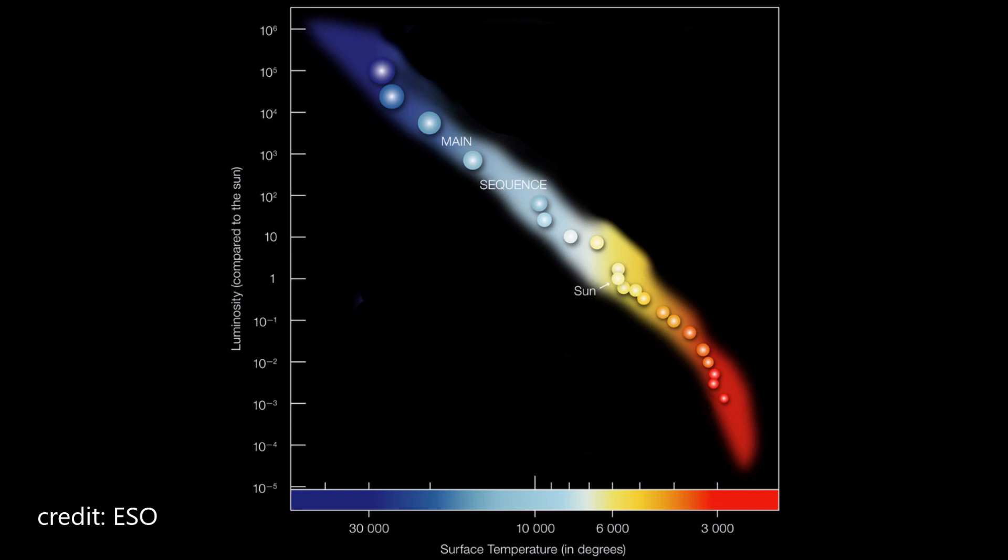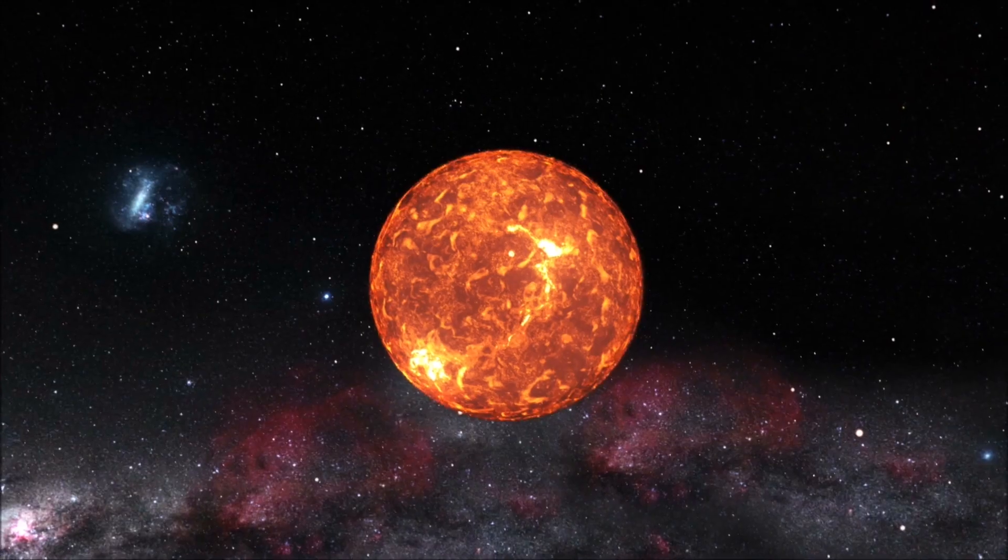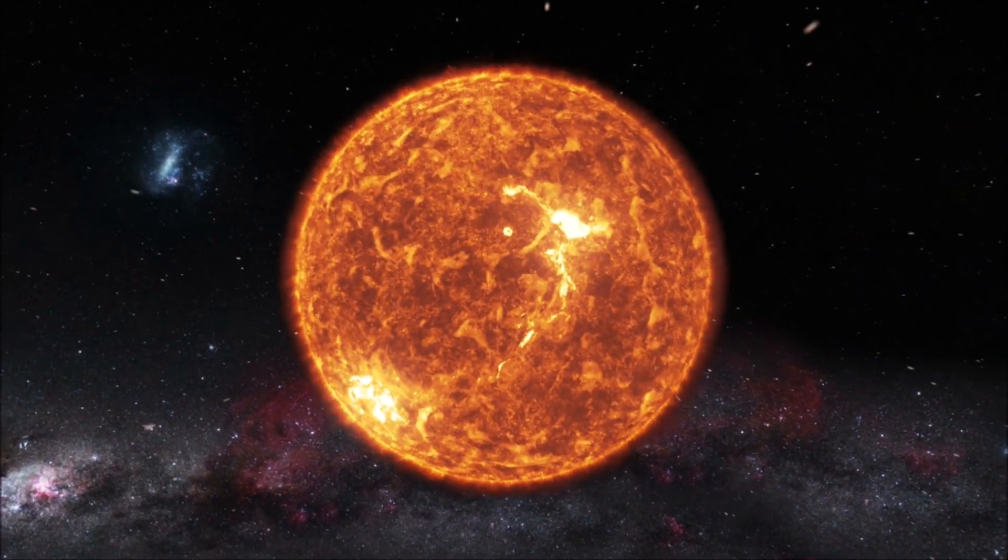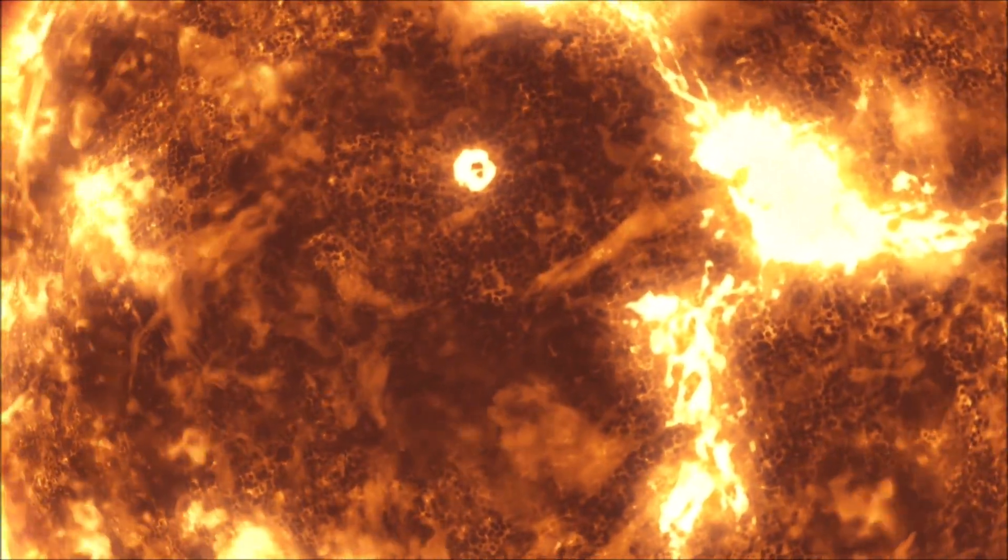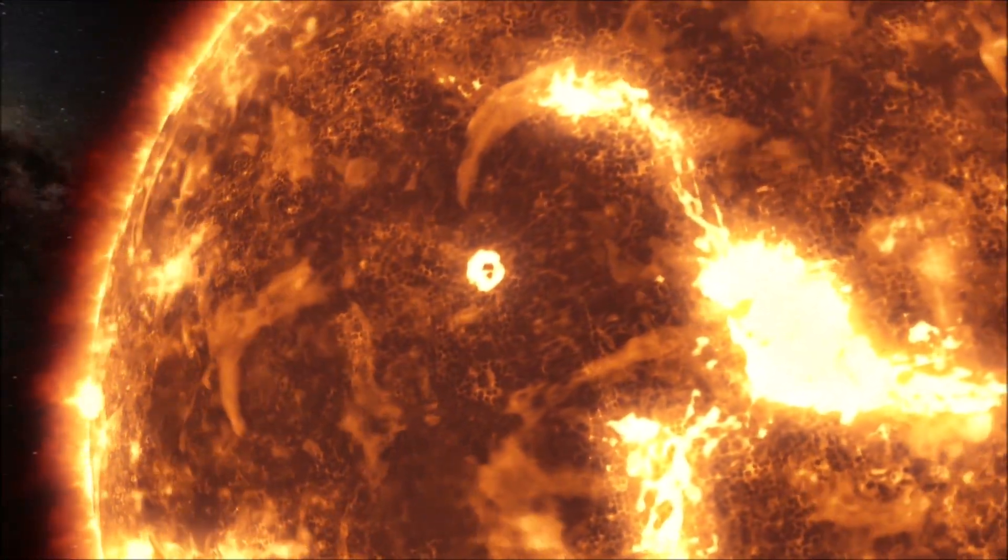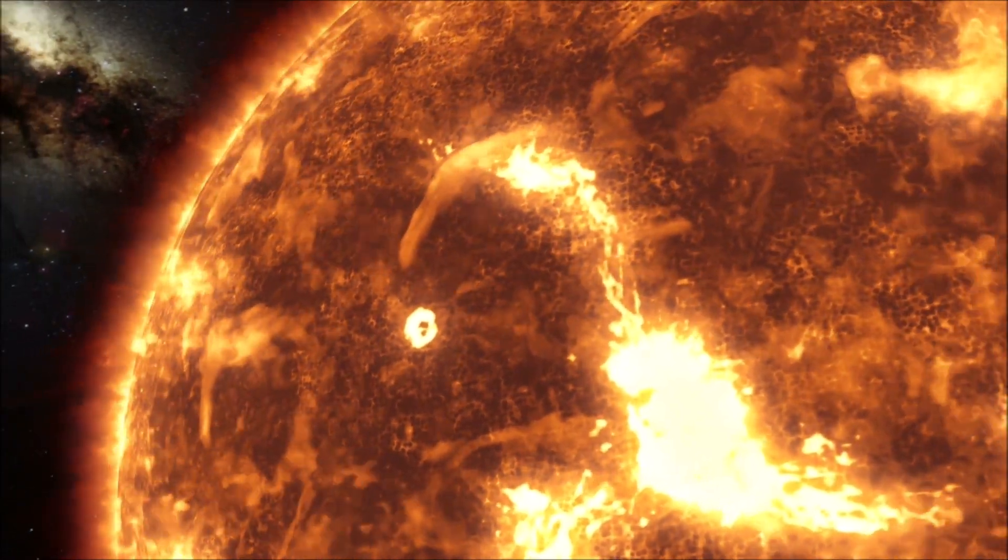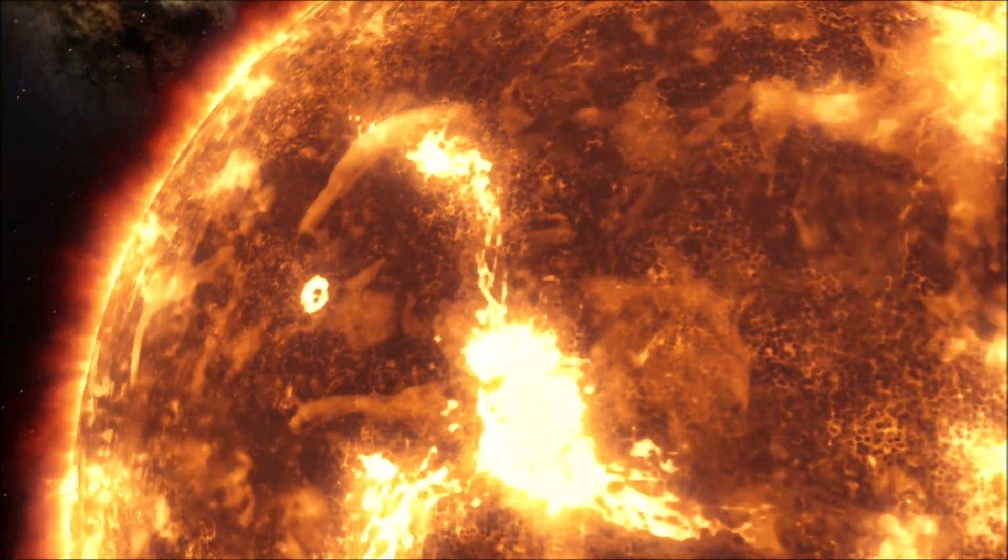The main sequence is a band that runs diagonally across the HR diagram and represents the majority of stars in the galaxy. These stars are undergoing nuclear fusion, which generates heat and light. The luminosity of stars on the main sequence depends on their temperature and mass, with the hottest and most massive stars being the brightest.